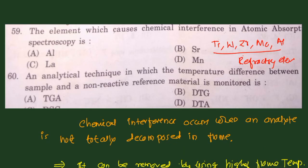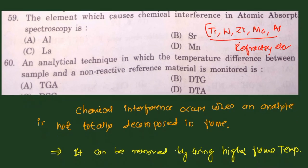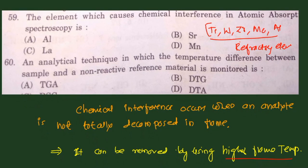Question 59 is from analytical chemistry — atomic absorption spectroscopy (AAS). Chemical interference occurs when an analyte is not totally decomposed in the flame. Refractory elements such as titanium, tungsten, zirconium, molybdenum, and aluminum form stable oxides and cause chemical interference. This can be removed by adding reagents like lanthanum or using high temperature. The answer for this question is aluminum.